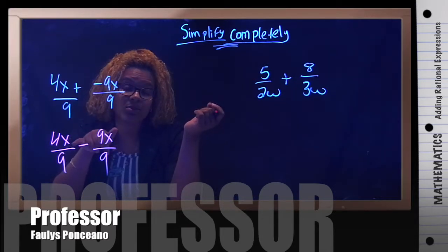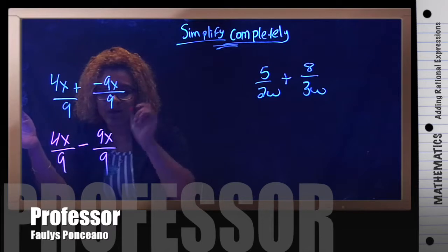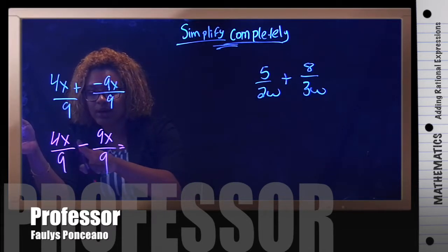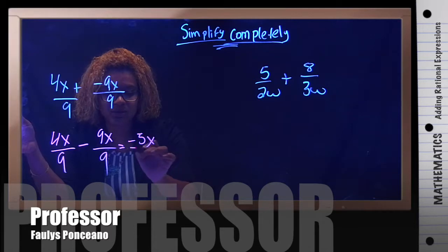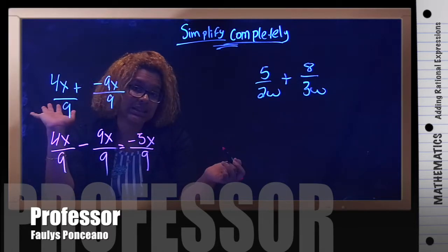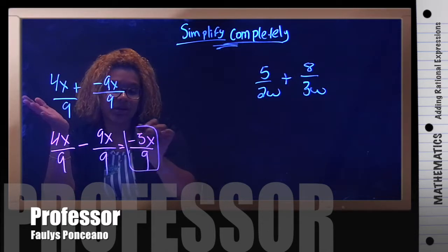In this case, they're both x's and they're both to the power of 1. So you can go ahead and subtract 4x minus 9x that gives you negative 5x over 9. That's it. Cannot simplify the numbers. So you'll be done for that example.